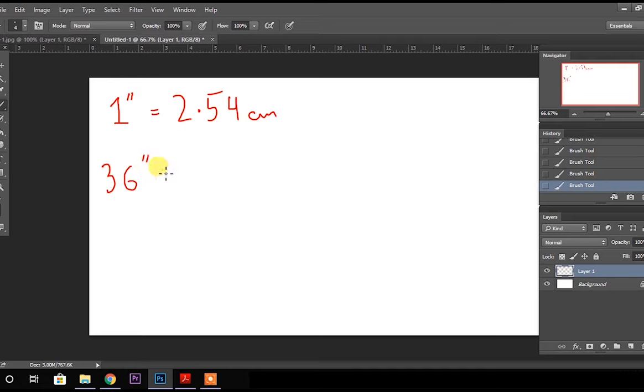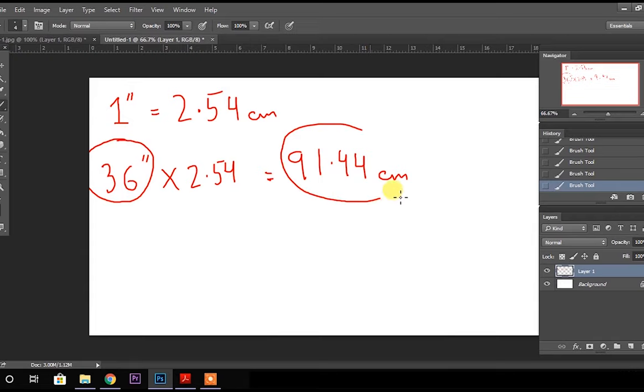This is all the measurements that you have seen here. So this answer is 91.44 cm. So you have converted 36 inches by multiplying it with 2.54.